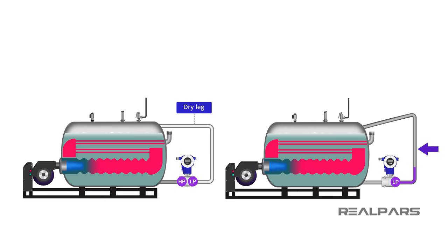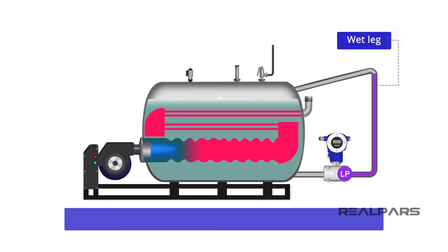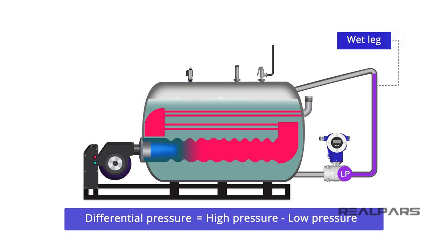Sometimes the reference leg needs to be filled with a fluid — this leg is now referred to as a wet leg. There are many reasons for a wet leg, such as avoiding the error in measurement caused by vapor condensate in the reference leg. The differential pressure, as always, will be high pressure minus low pressure. But the resulting differential pressure is not easy to predict because the liquid in the vessel is usually not the same as the liquid in the wet leg.